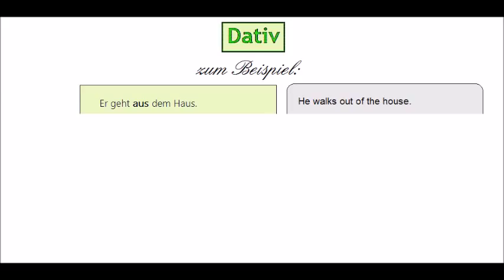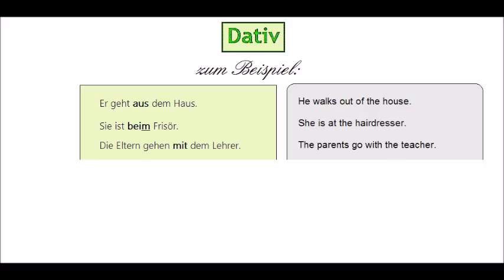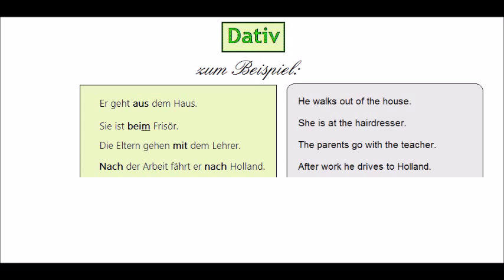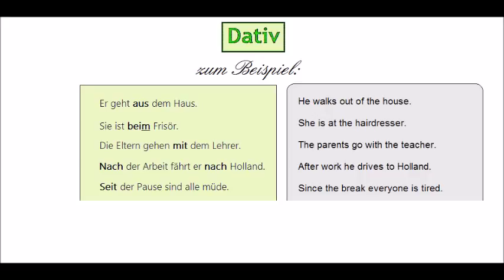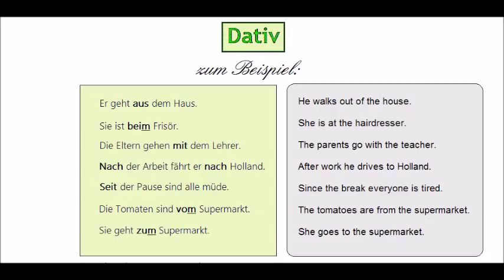Let's look at some examples. He walks out of the house. 'Sie ist beim Friseur' — she is at the hairdresser. 'Die Eltern gehen mit dem Lehrer' — the parents go with the teacher. 'Nach der Arbeit fährt er nach Holland' — after work, he drives to Holland. 'Seit der Pause sind alle müde' — since the break, everyone is tired. 'Die Tomaten sind vom Supermarkt' — the tomatoes are from the supermarket. 'Sie geht zum Supermarkt' — she goes to the supermarket.